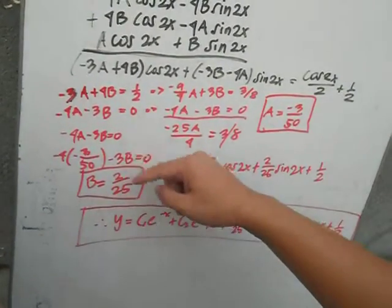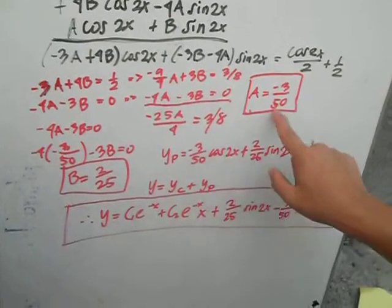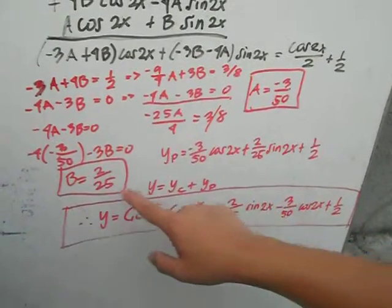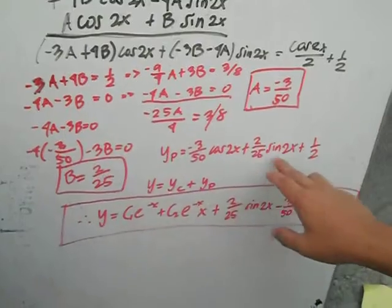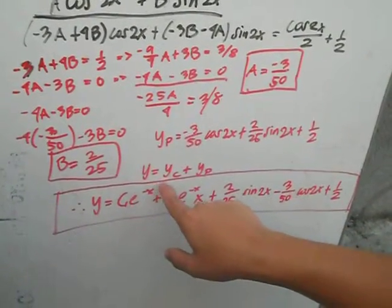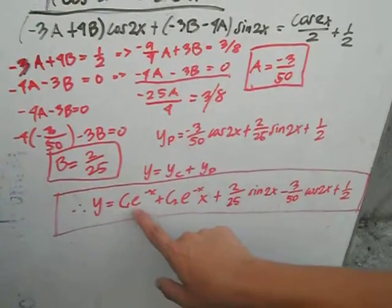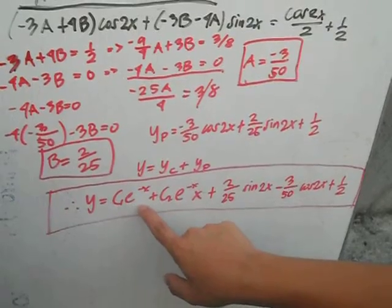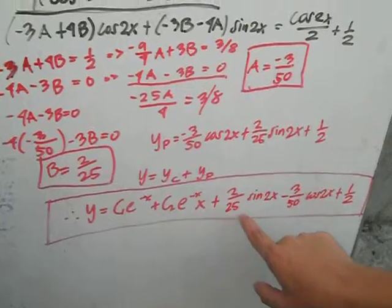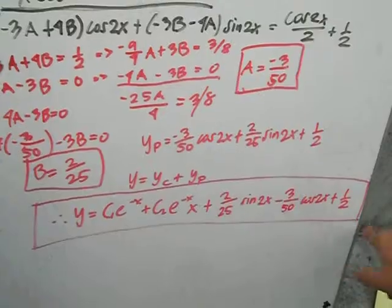So yp is equal to negative 3 over 50 cosine 2x plus 2 over 25 sine 2x plus one half. Since y equals yc plus yp, the final answer is y equals c1 e to the negative x plus c2 x e to the negative x plus 2 over 25 sine 2x minus 3 over 50 cosine 2x plus one half.